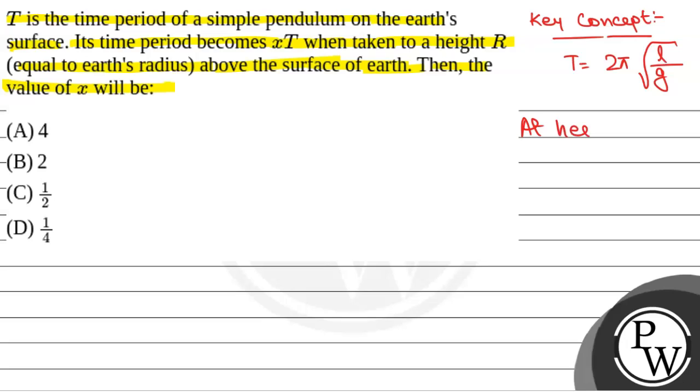At height H equal to R, the acceleration due to gravity G' becomes G divided by (1 + H/R)².